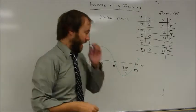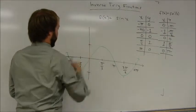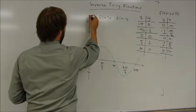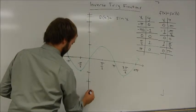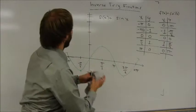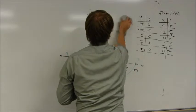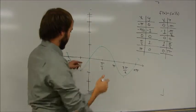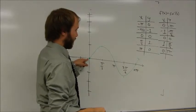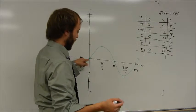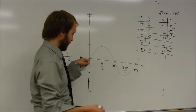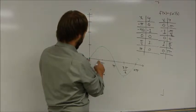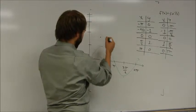I can plot a few points here. I have to extend my graph just a little bit to do that. For example, if I plot the point zero, zero, that's going to be on both graphs. If I plot the point at one, it's going to have an output value of pi over two. Now pi over two is about one and a half — pi is about 3.14. So if I go over about one and up about one and a half, that's going to be a point something like this right here.